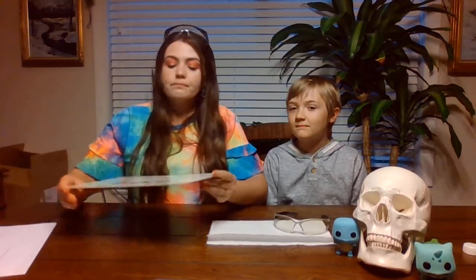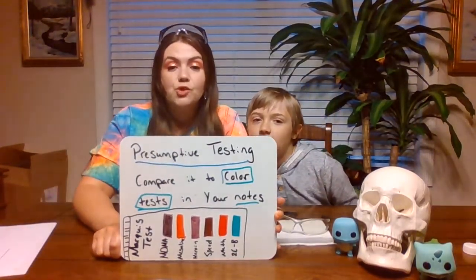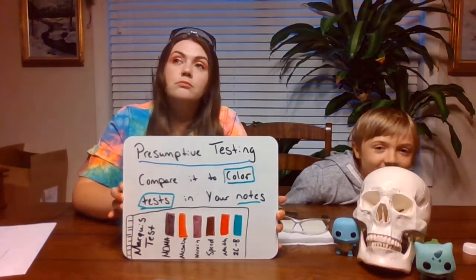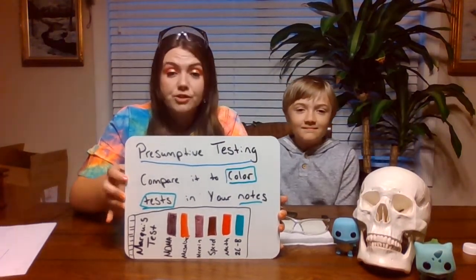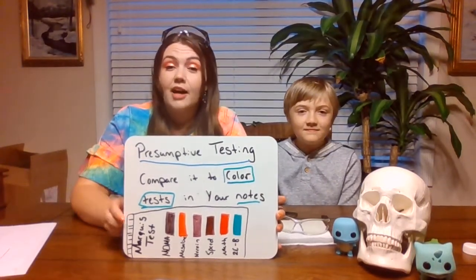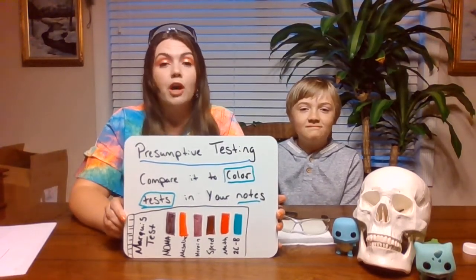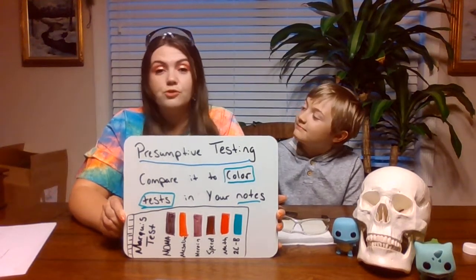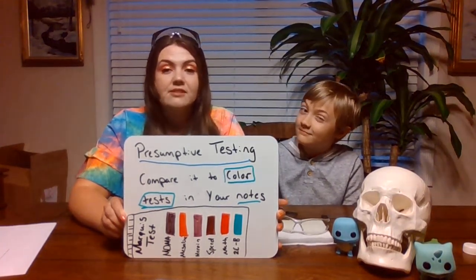So how we end up testing them is called a presumptive test. So a presumptive test is a type of color test. Well, no. A color test is a type of presumptive test and that's kind of what we're going to be doing. We're going to be looking for color changes and if it dissolves or doesn't dissolve or if it fizzes or doesn't fizz. That kind of basic stuff.